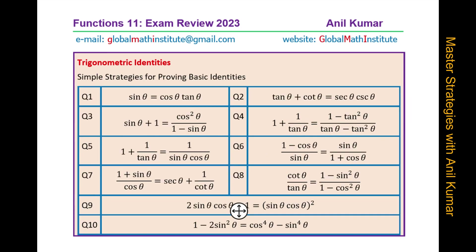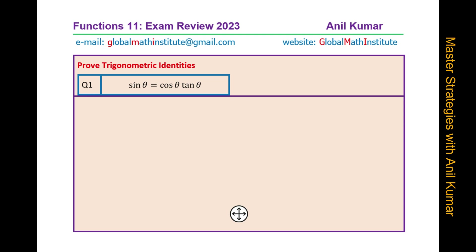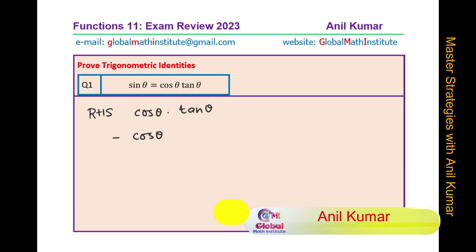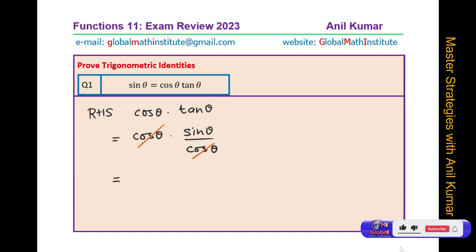Now let us begin solving these questions. One of our strategies will be to write tan and cotangent in terms of sin and cosine, and all the secondary ratios as primary ratios — the reciprocal of them. Let us begin with the very first one, which is sin theta equals cos theta divided by tan theta. We start with the right hand side, which is cos theta times tan theta. Using the quotient identity, this equals cos theta times sin theta over cos theta for tan. Clearly, cos and cos cancel, and you are left with simply sin theta, which is equal to the left hand side.